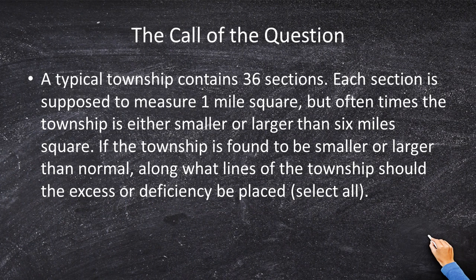The call of the question: a typical township contains 36 sections. Each section is supposed to measure one mile square — 5280 by 5280 feet. But oftentimes the township is either smaller or larger than six miles square, so we either cannot fit in 36 one-mile sections, or we have too much land — excess property — inside the 36 sections.